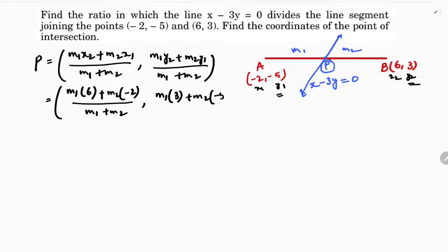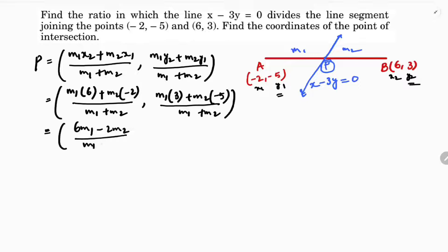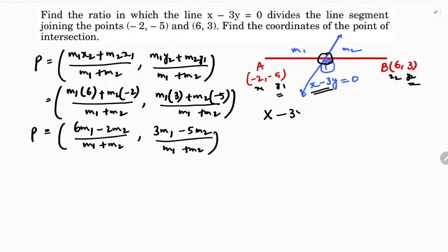Substituting the values: x = (6m1 - 2m2) / (m1 + m2) and y = (3m1 - 5m2) / (m1 + m2). This is the point common to both the line segment AB and the line x minus 3y equals 0, so we substitute this point into the line equation.